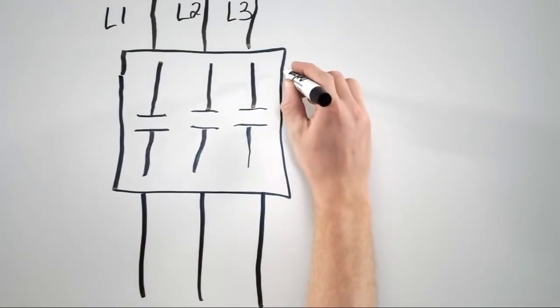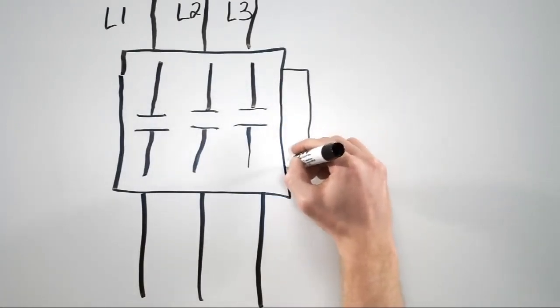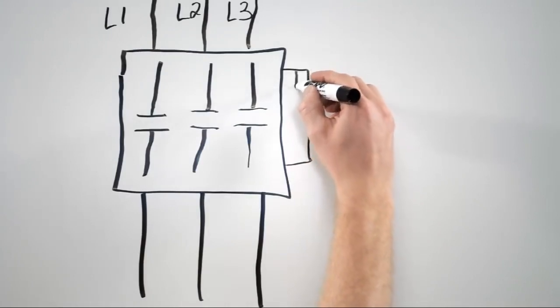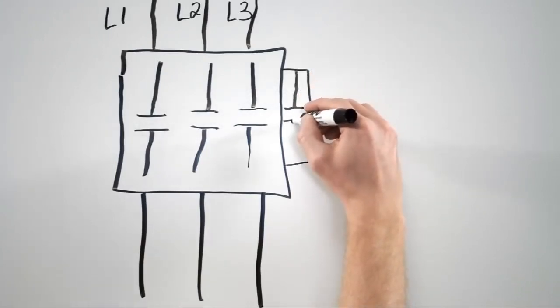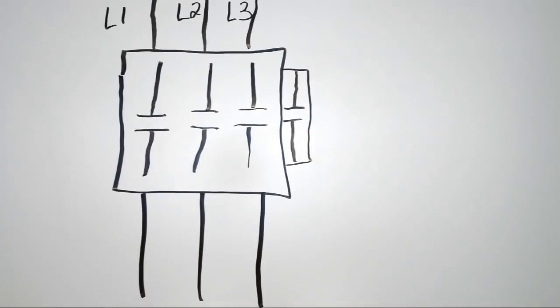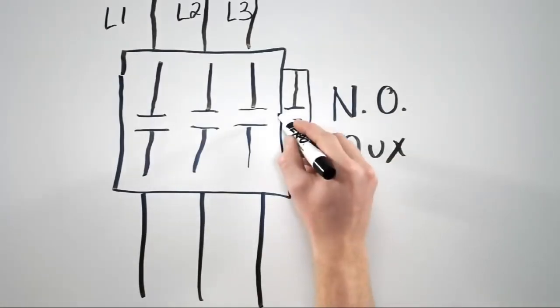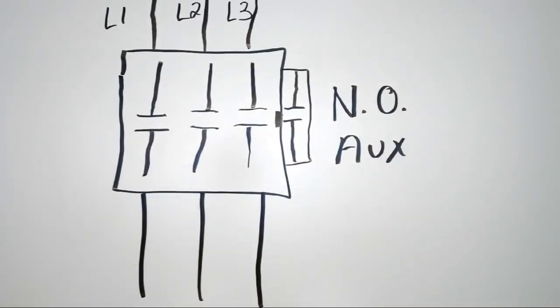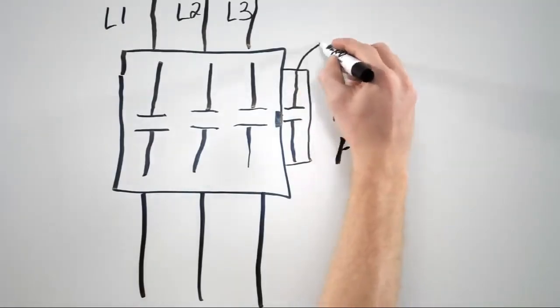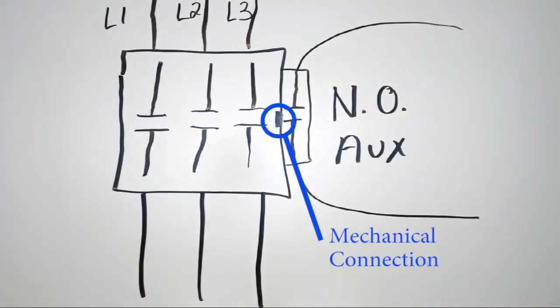Well, there is a very common accessory that gets added to contactors called an auxiliary contact. Often it's mounted to the side of the contactor, and inside the auxiliary contact module, we have an electrical contact that can be normally open or normally closed. I've drawn a normally open auxiliary. If you grab a normally open auxiliary off of the shelf, it will not pass electricity through it unless it gets changed by an outside force. When it gets attached to the side of a contactor, there is a mechanical connection between the auxiliary contact and the moving parts inside the contactor.